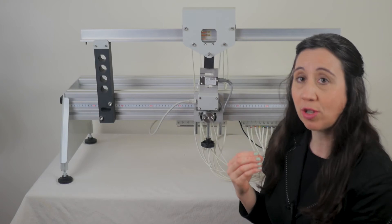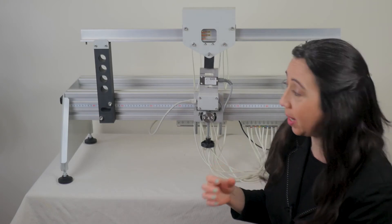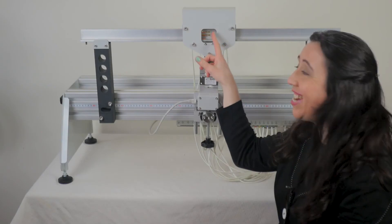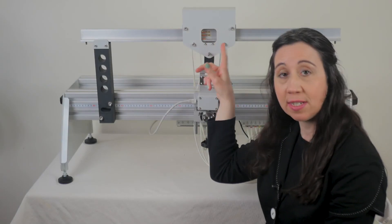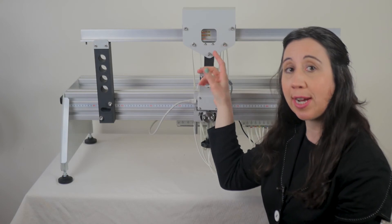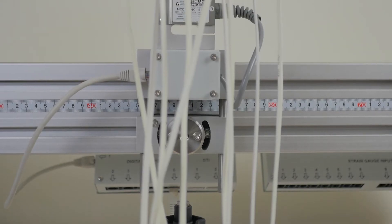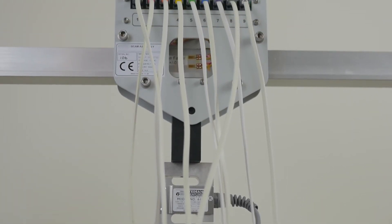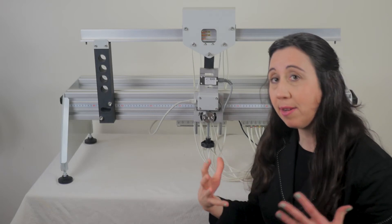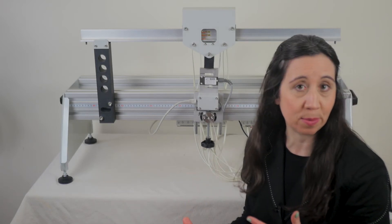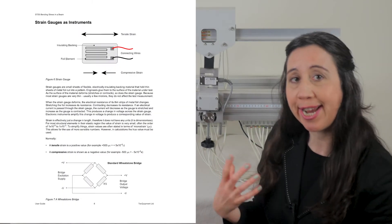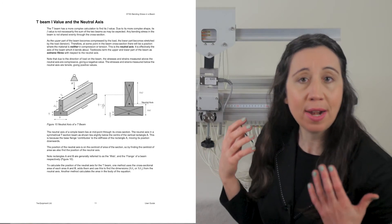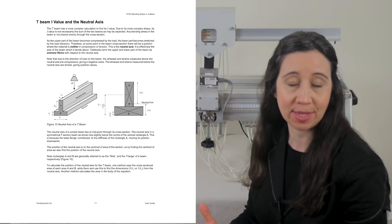The beam is held onto the structures platform, supplied separately, by two supports. In the middle of the beam are nine strain gauges fixed at different heights to measure the strains caused by the different loads applied. These are connected to a strain gauge amplifier. There is a lot of theory to explain how strain gauges work, including concepts such as the Wheatstone bridge, quarter bridge connections, Young's modulus, second moment of area, I value, and neutral axis, all contained within the user guide.